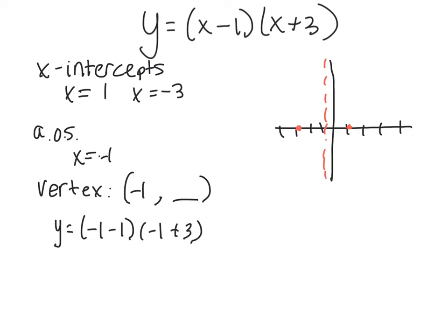And I'm going to do some good algebra which tells me I have negative 2 times positive 2 which means y is negative 4. So my vertex is the ordered pair negative 1, negative 4.